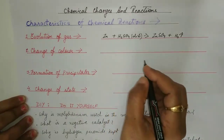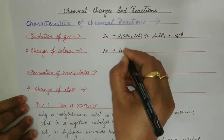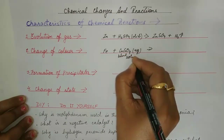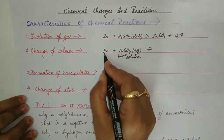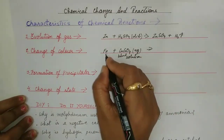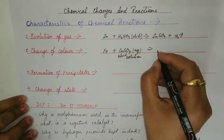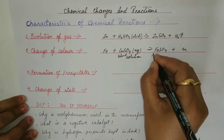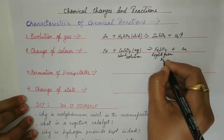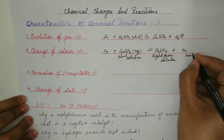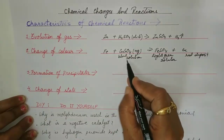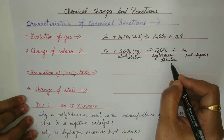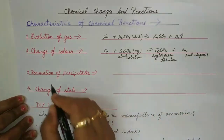The second characteristic is change of color. Iron plus copper sulphate (aqueous, which is a blue solution) — since iron is above copper in the reactivity series, it gives ferrous sulphate plus copper. Ferrous sulphate is a light green solution, and copper appears as a red deposit. When iron is added to blue copper sulphate solution, you observe a color change to light green solution and a red deposit of copper.